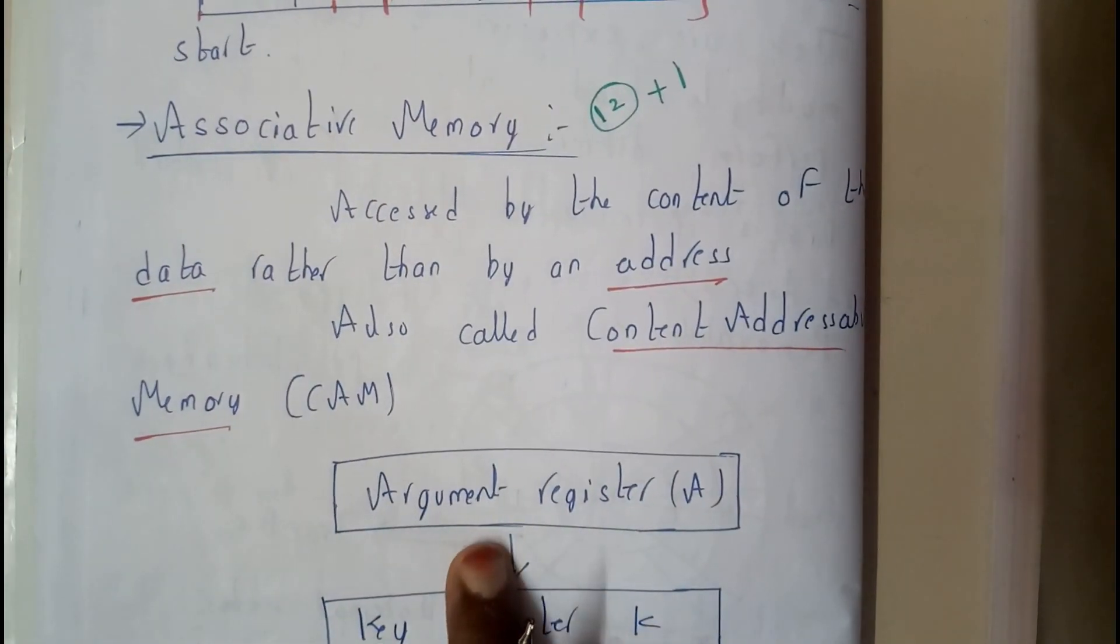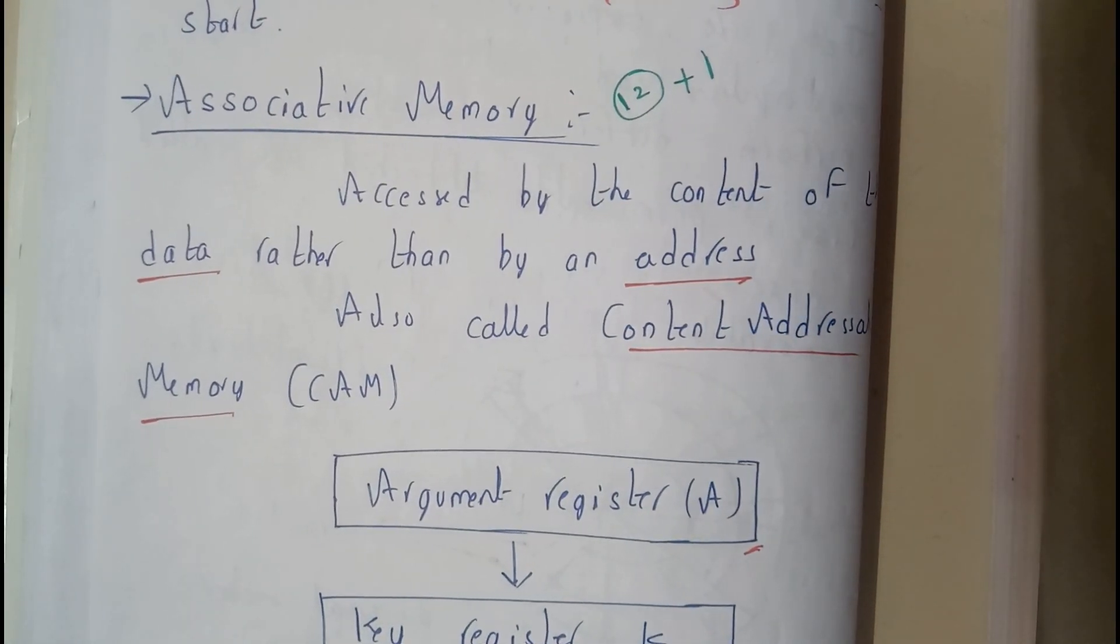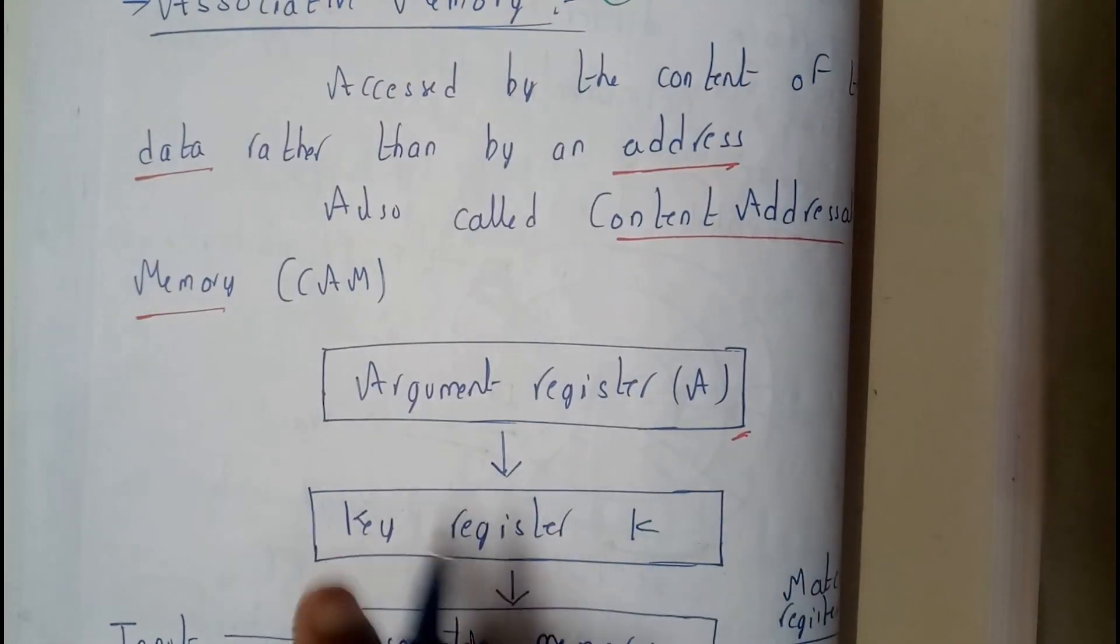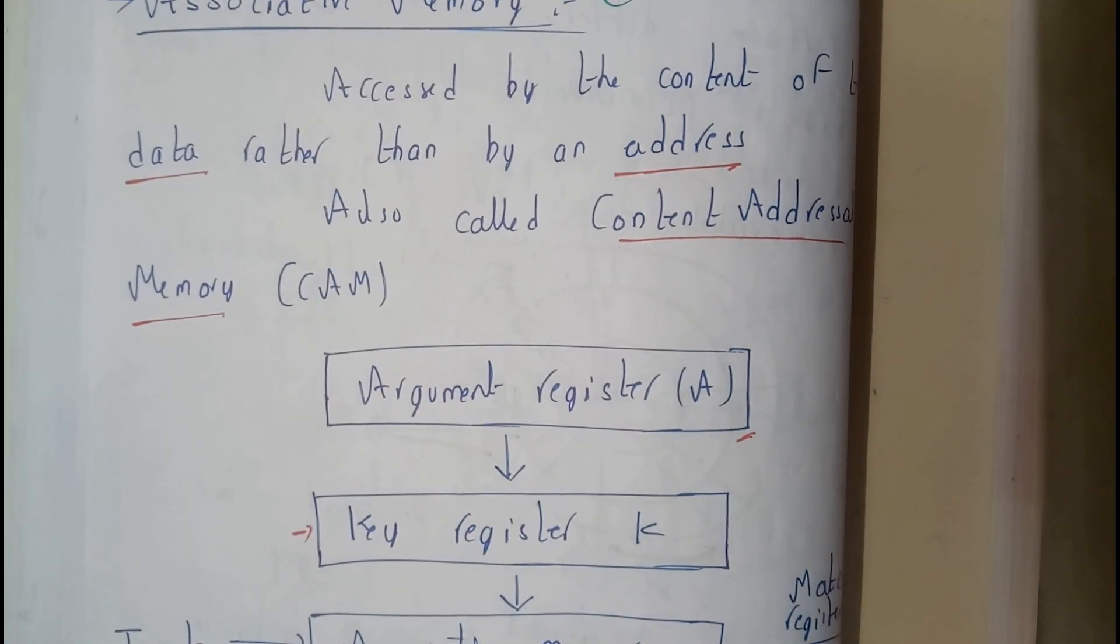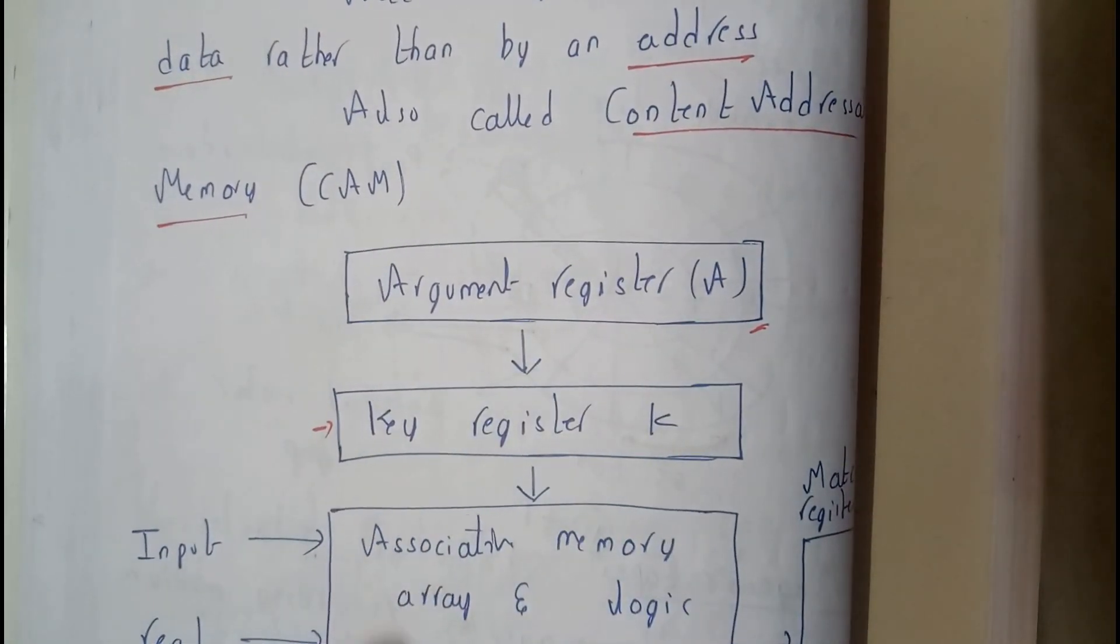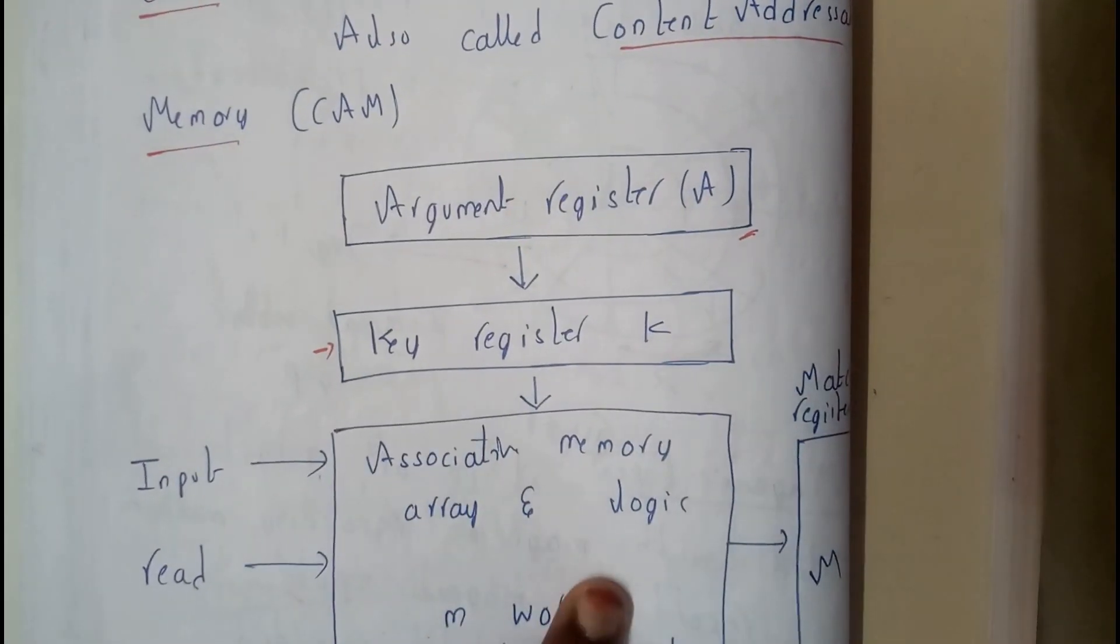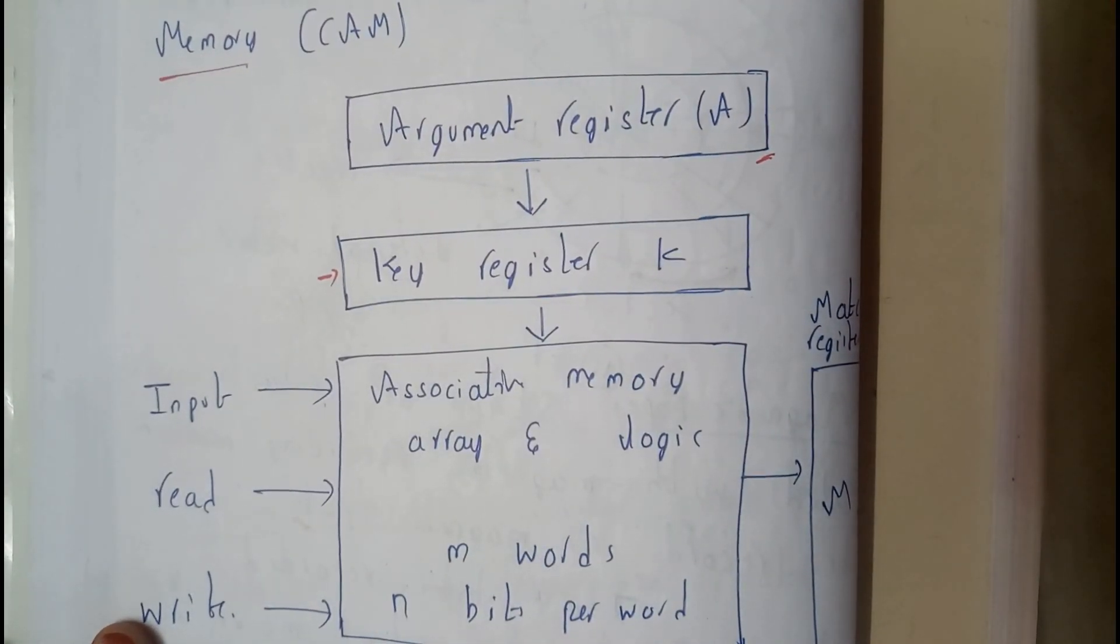Here we will be having an argument register which will be given in the question or which is fixed, and the key register in which we will be storing our main key. The value that we want to search is stored in the key register and all these things are entered or transferred into associative memory. It has m words with n bits per each word.